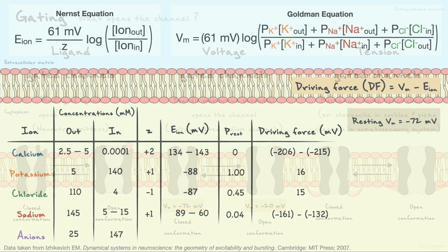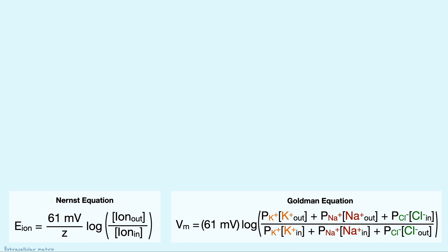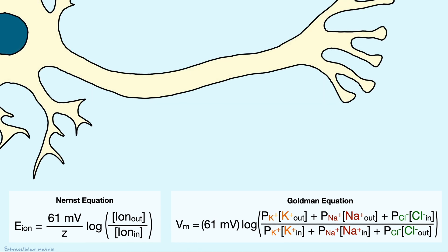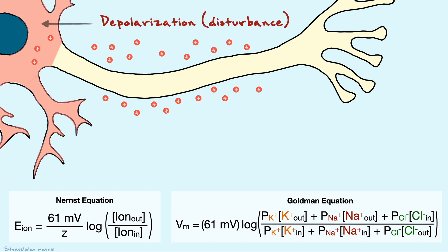Now, back to the Goldman equation. As I have discussed in the overview, the generation of a signal in the neuron begins with the entry of positive charges in the membrane, or in other words, a depolarization. We now understand that the positive charges that enter the cell are sodium, and they are able to enter because their permeability has increased. The entry of these charges causes a disturbance on the resting membrane potential, which we just calculated with the Goldman equation.